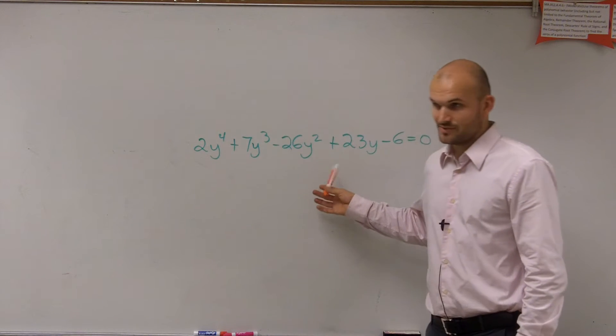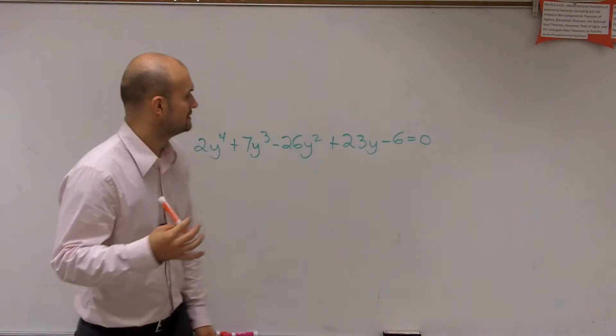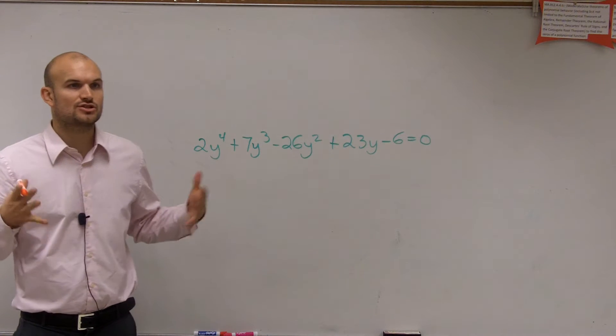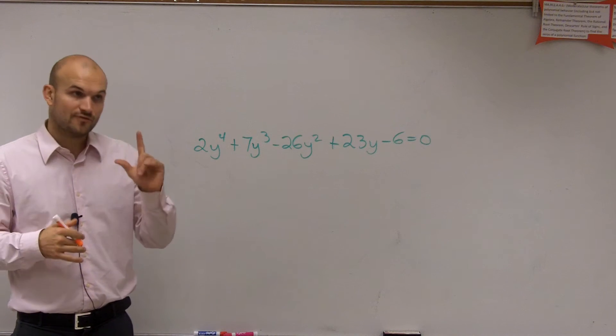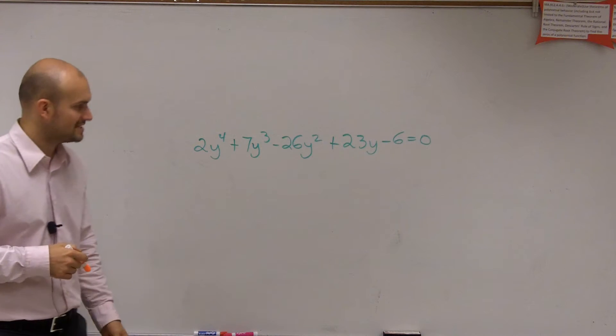So now this one is going to look pretty difficult to factor, right? So what we're going to do is we're going to use some tests to help us determine all of the zeros. The first test was the rational zero test, which I explain a little bit more further in detail here.